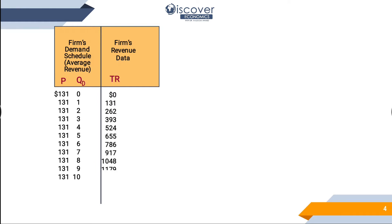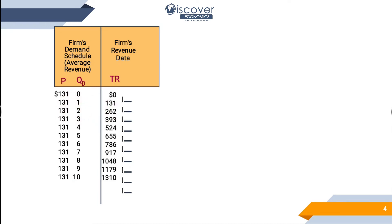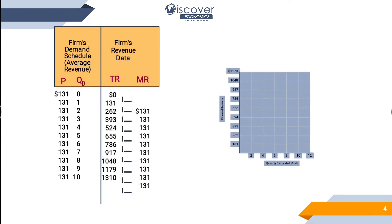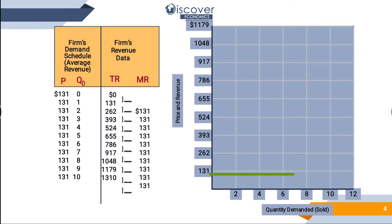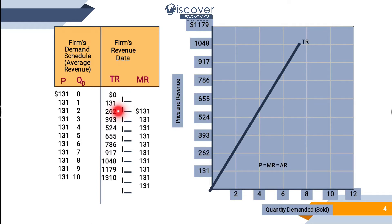Now we see revenue. Revenue is a simple formula: price multiplied by quantity. 131 multiplied by 1 equals 131. 131 multiplied by 2 equals 262. 131 multiplied by 3 equals 393. That is how total revenue is calculated. Marginal revenue formula is: change in total revenue divided by change in quantity. Second minus first: 262 minus 131 equals 131.